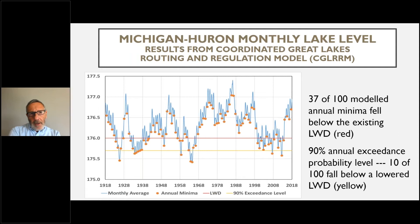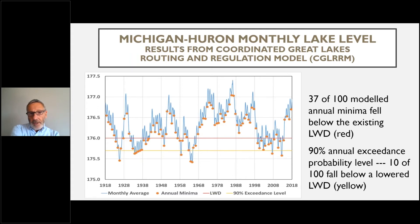In order to find the lowest monthly lake averages for each year, the data is divided into 12-month periods beginning in July and ending in June. This prevents double counting of extreme low-water months that could occur in December and January of consecutive years. The plot shows the annual lowest levels from the model results for Michigan-Huron as orange dots. 37 of these annual minima fell below the existing low-water datum, shown in red. The GEV results give the position of the 90% annual exceedance probability level, shown in yellow.